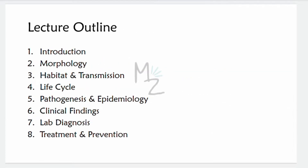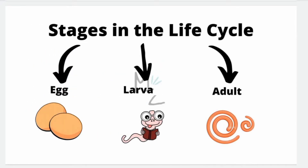Lecture outline: we have introduced Enterobius vermicularis, and now we'll discuss its morphology, habitat and transmission, life cycle, pathogenesis and epidemiology, clinical findings, lab diagnosis, treatment, and prevention. Before discussing morphology, note that there are three developmental stages in the life cycle: the egg, the larva, and the adult worm. We'll discuss their morphology one by one.